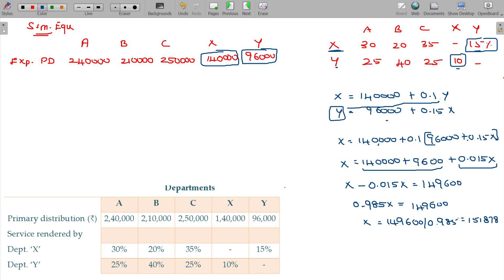Similarly, for Y I substitute this value. Y equals 96,000 plus 0.15 of X, X being 151,878. Then the ultimate value of Y here being 118,782.